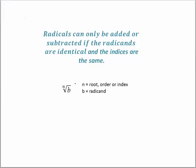Let's remember what a radical looks like. The N is the root order or index — I commonly refer to that as the root. Anything underneath the radical sign is referred to as the radicand. We're going to be adding, subtracting, multiplying, and dividing radicals. Let's take a look at adding and subtracting first.